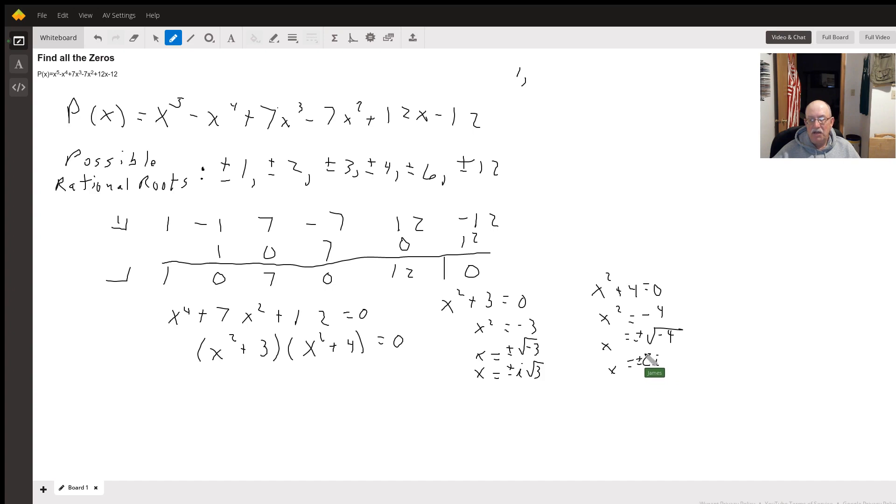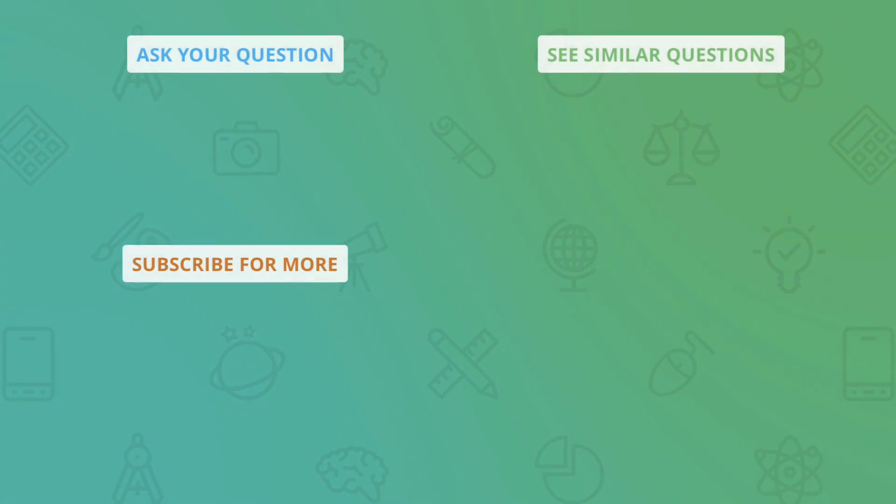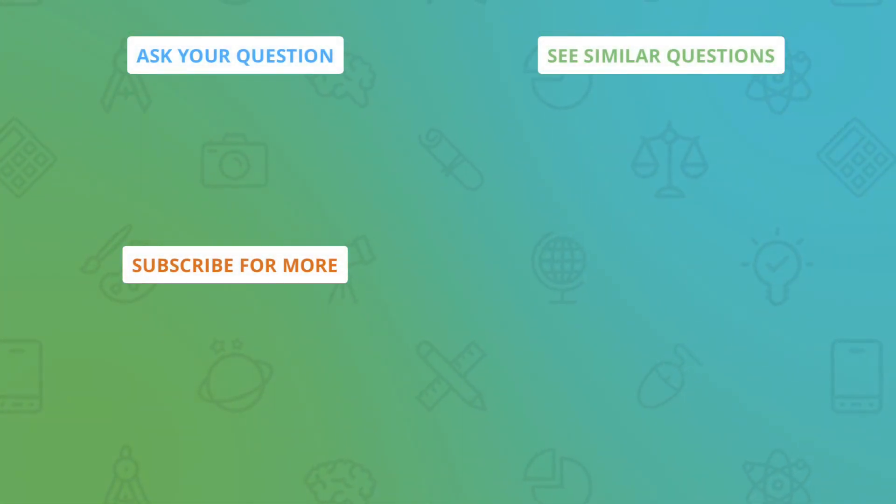So I've got 5 roots here, but I only have 1 zero. So the only place that graph goes through the x-axis is when x equals 1. I get 5 answers like I should from the degree of 5, but 4 of my answers are imaginary, so they don't go through the x-axis. So the only zero we get is 1.